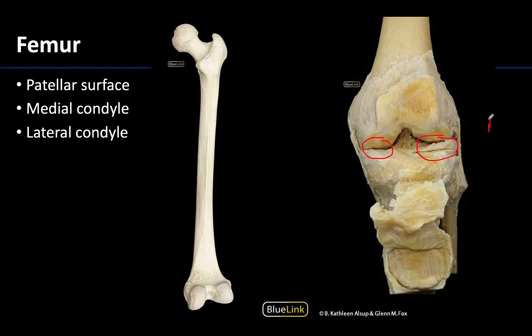Looking at this anterior view of a deep joint dissection, you can see that the patella has been reflected. It's embedded — in fact it develops within the quadriceps femoris tendon — and when it is not reflected it articulates with the patellar surface of the femur, which is this patellar-shaped smooth surface on the anterior and distal surface of the femur. Remember, smooth surfaces likely tell you there was articular cartilage located there during life due to a joint location.